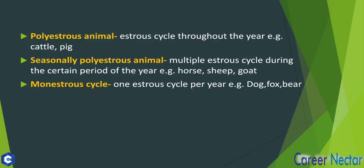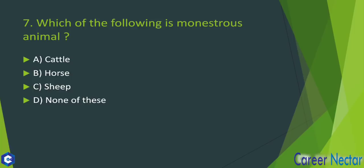Monoestrus animals — those with only one estrus cycle per year — include dogs, foxes, wolves, and bears. So in the question asking which of the following — cattle, horse, sheep — is a monoestrus animal, monoestrus animals are dog, wolf, and fox. The answer to this question is option number D.